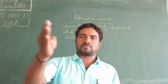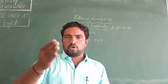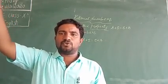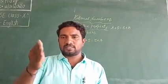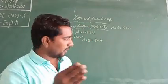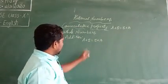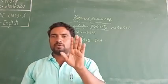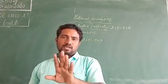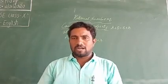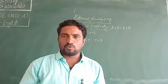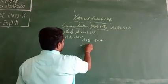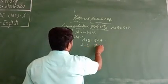The whole number set starts from 0, 1, 2, 3, 4, 5, 6, and so on up to infinity. These are the whole numbers, where A and B are any two whole numbers. I will take A equals to 2 and B equals to 3. You can take any whole numbers.